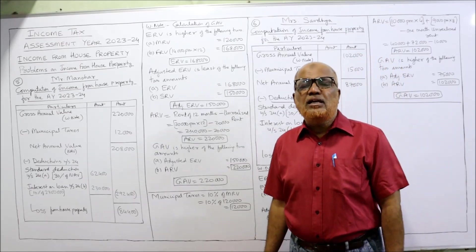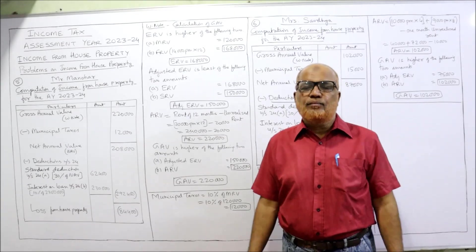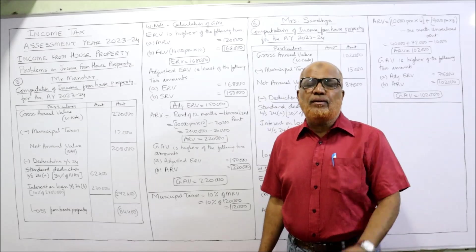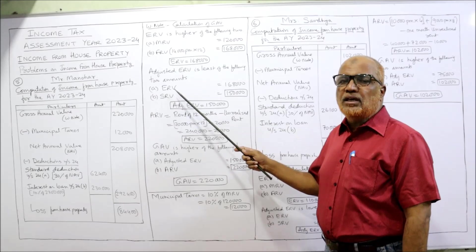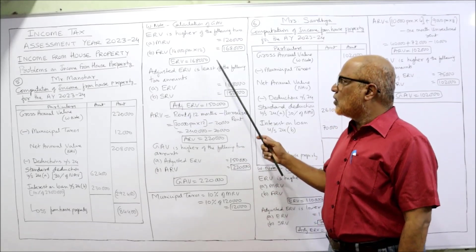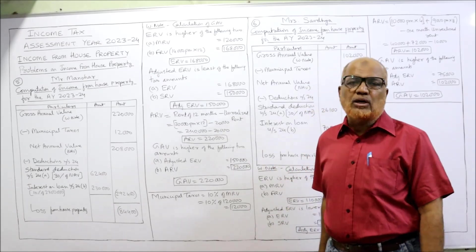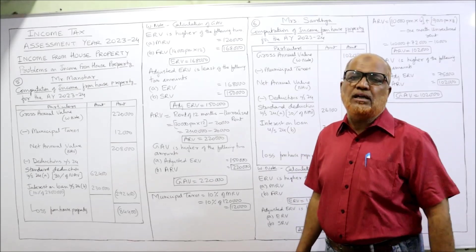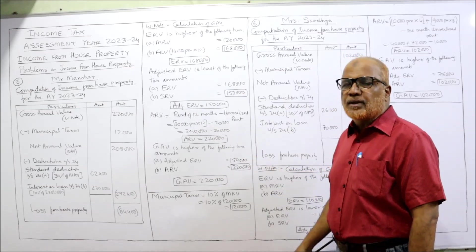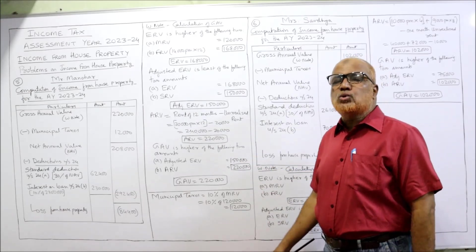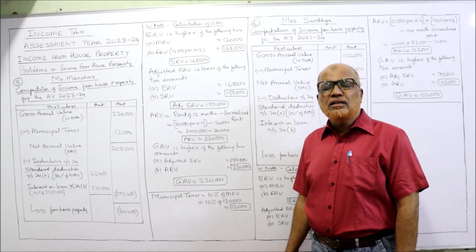The second step is adjusted ERV. This step is required if the house is governed by the Rent Control Act — that is, only when SRV is given. Adjusted ERV is the least of ERV or SRV. ERV is 1,68,000 and standard rental value is 1,50,000. The lower value is 1,50,000, so adjusted ERV is 1,50,000.